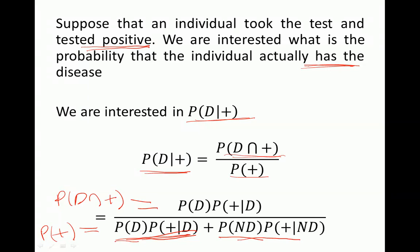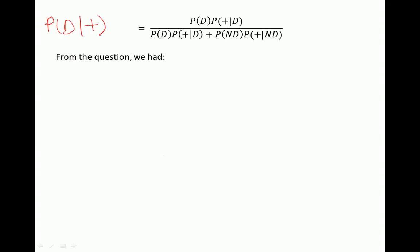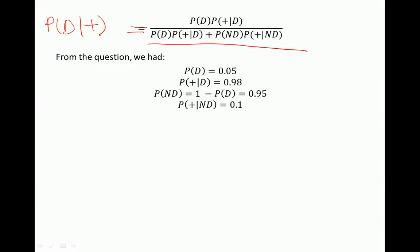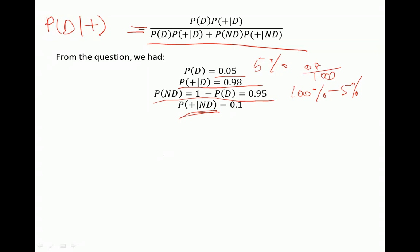The possible outcomes are disease and no disease, and we're interested in the conditional probability of a positive test result. Now we just input our numbers. Probability of disease is 0.05 since 5% of people have the disease. Probability of positive given disease is 0.98. Probability of no disease is 0.95, since 95% of people don't have the disease. And probability of positive given no disease is 0.1, since the test gives a false positive 1 out of 10 times.